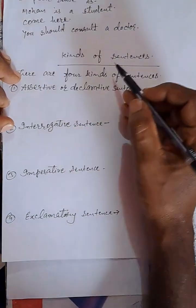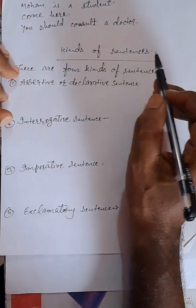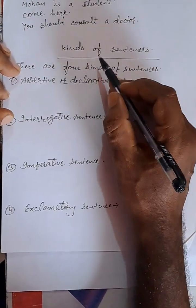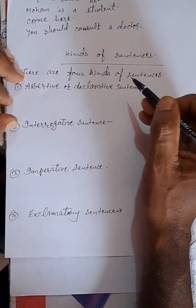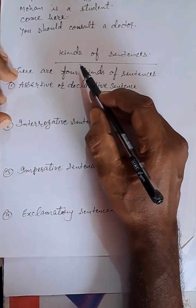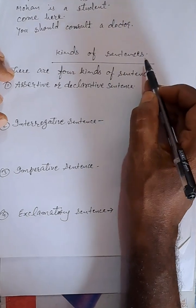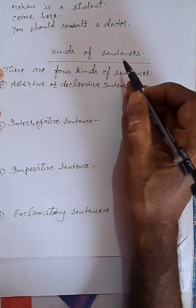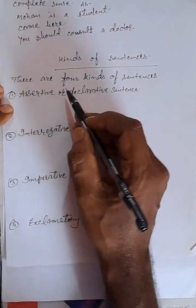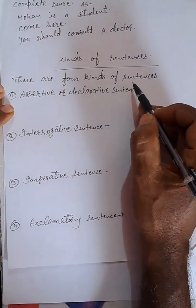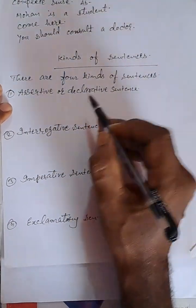How many kinds are there of sentences? We will learn the kinds of sentences here. There are four kinds of sentences.